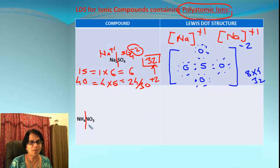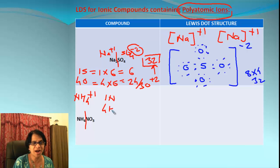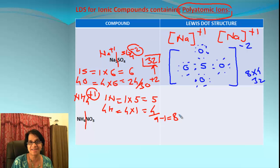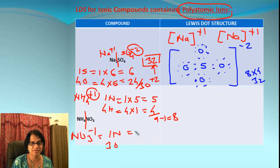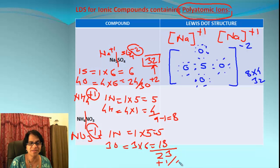Now the next one looks very tricky. We have ammonium nitrate — that means we have two polyatomic ions combining to form an ionic compound. The first one is ammonium, NH4 positive one. We have one nitrogen and four hydrogens. Nitrogen brings five electrons and each hydrogen brings one electron, so total is five plus four, nine. With the positive one charge, we subtract one — that means it is eight electrons. For nitrate with a negative one charge, we have one nitrogen and three oxygens. That is one times five, which is five, and three times six, which is 18. 18 plus five is 23. With the negative one charge, we add one, giving 24 electrons.